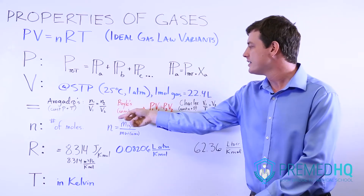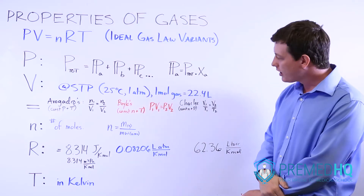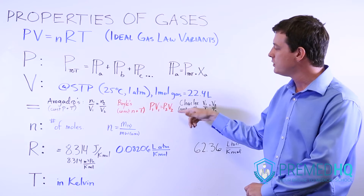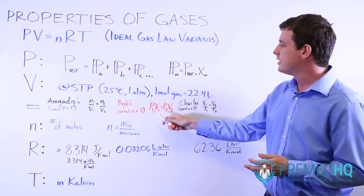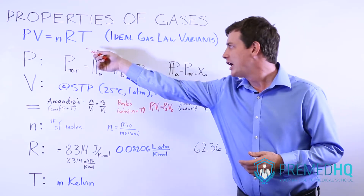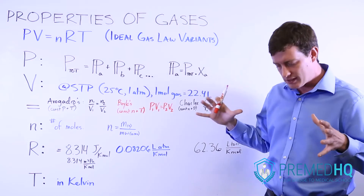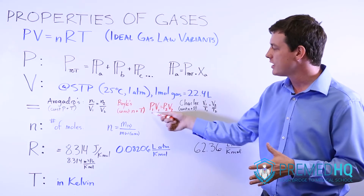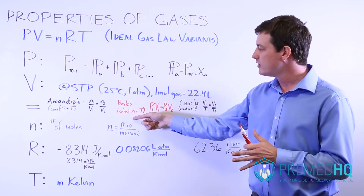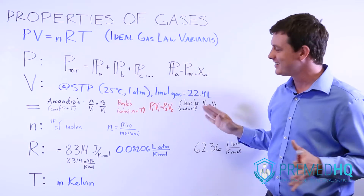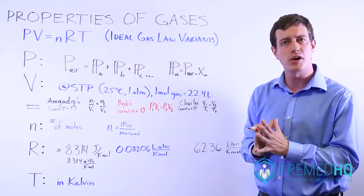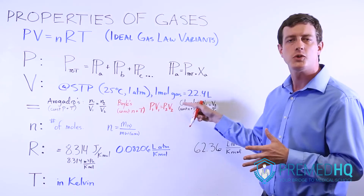Boyle's law says that if the number of moles and temperature are constant, then the product of pressure and volume in one situation equals that product in another: P₁ times V₁ equals P₂ times V₂. Pressure and volume vary in an inversely proportional relationship. So if n, temperature, and R are constant and pressure increases, volume must decrease — and vice versa. That is Boyle's law.